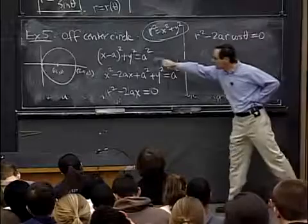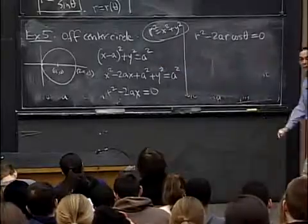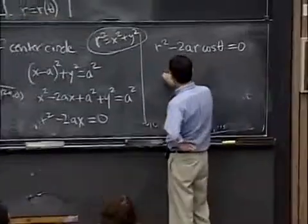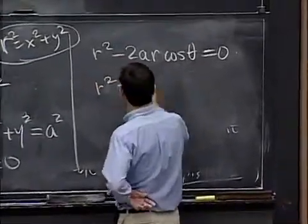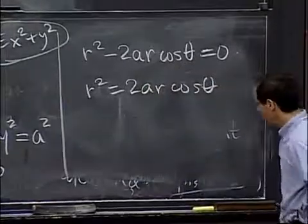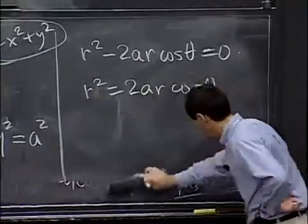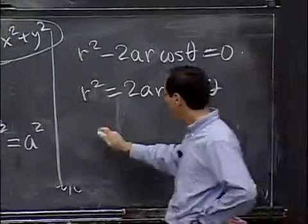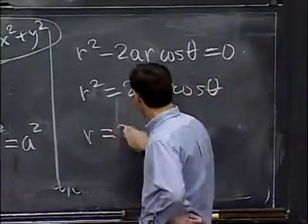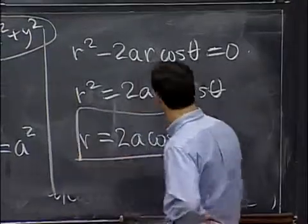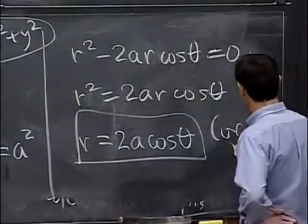As I said, I could have done that at the beginning. I just simplified first. And now, this is the same thing as r² = 2ar cos θ. And we're almost done. There's a boring part of this equation, which is r = 0. And then if I divide by r, there's the interesting part of the equation, which is r = 2a cos θ.